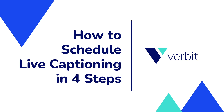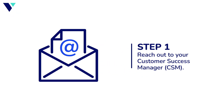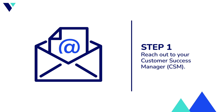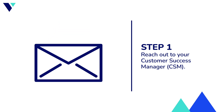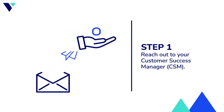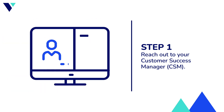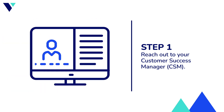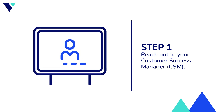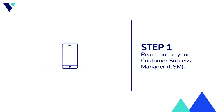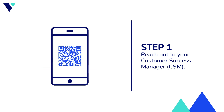Follow these four steps to start captioning. First, reach out to your customer success manager. We'll learn a bit more about your needs and preferences to help us determine the best solution for your event. For instance, captioning can be shared via live streaming, on-site with a jumbotron, or even on your mobile device through a QR code.